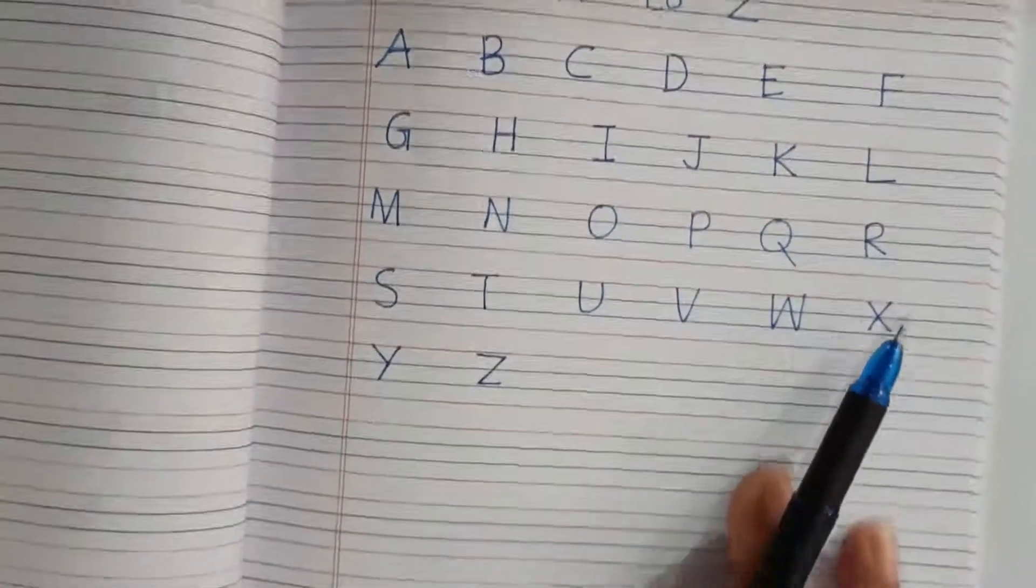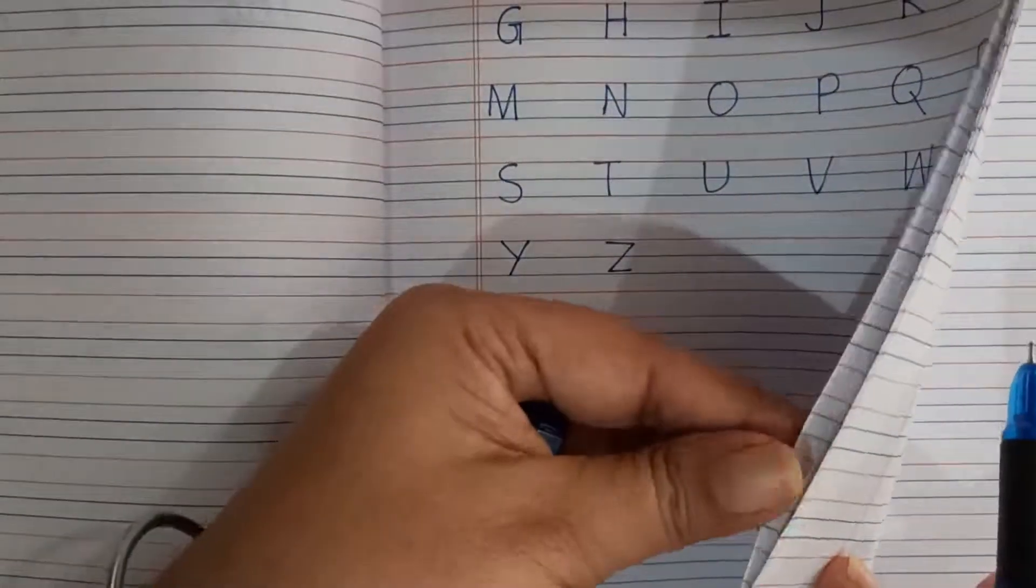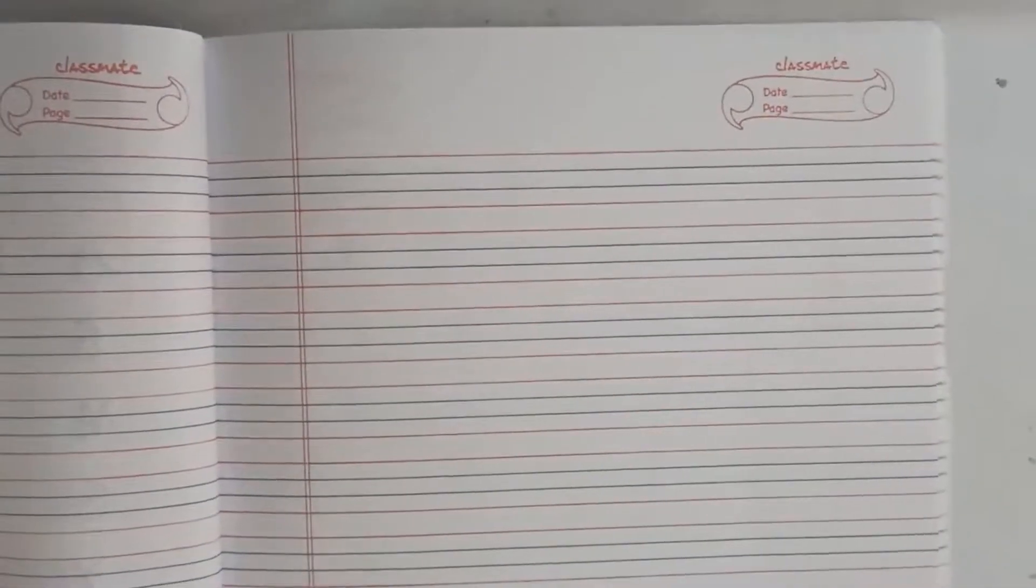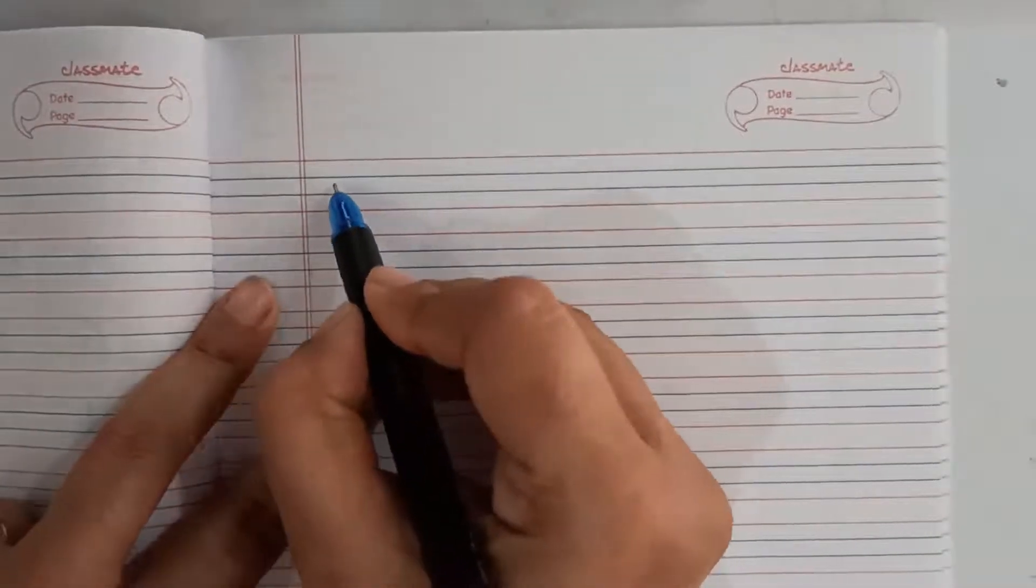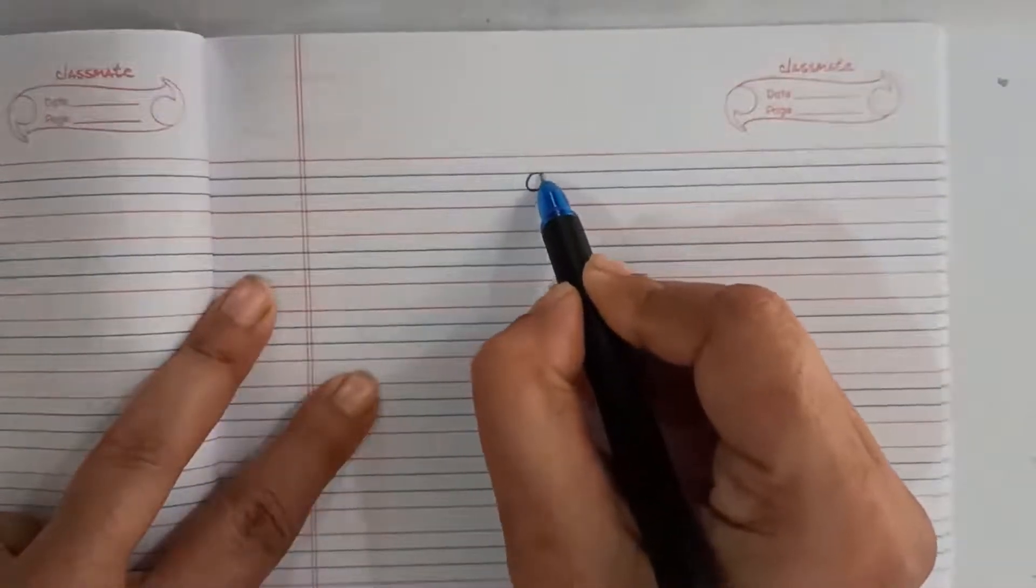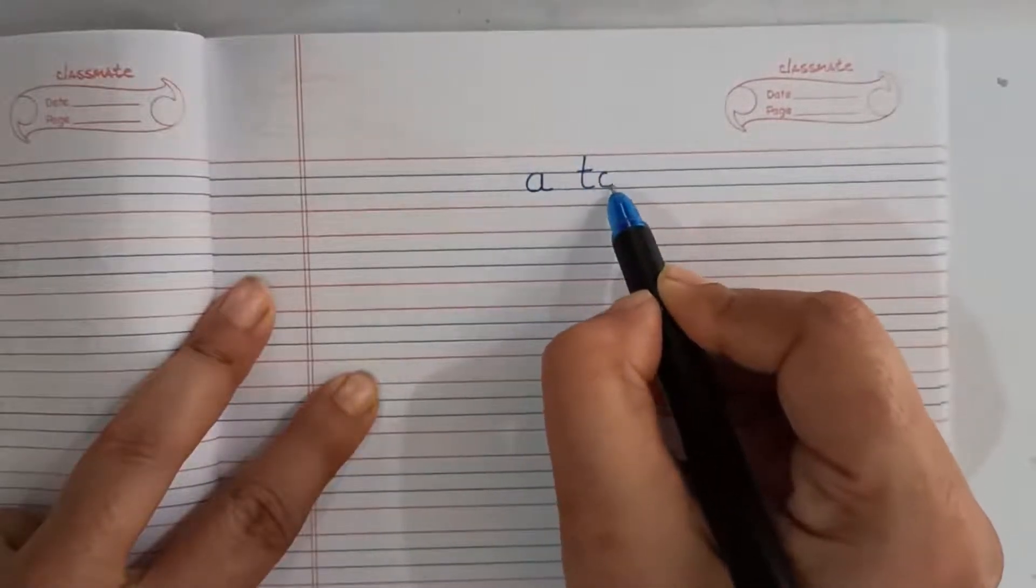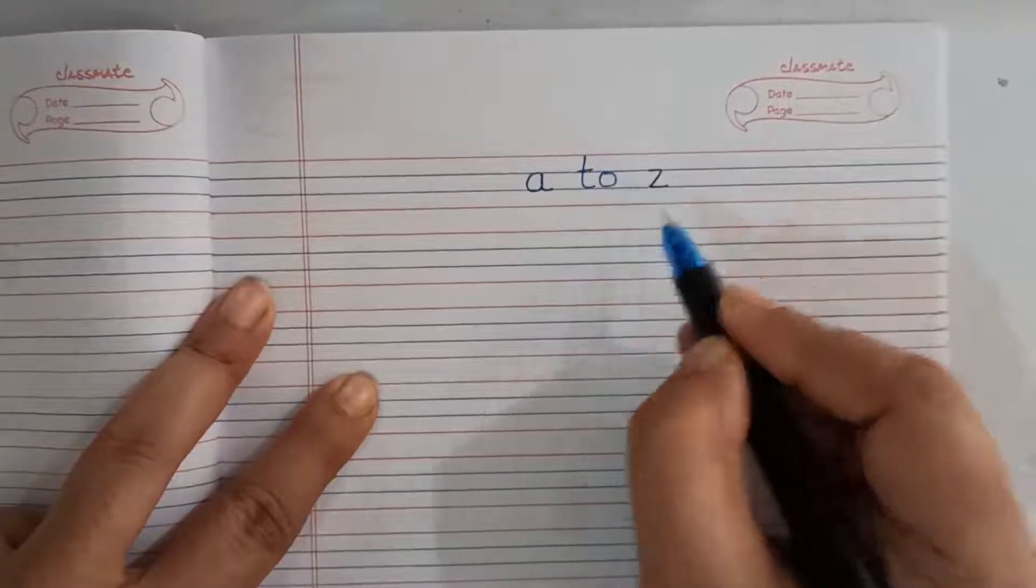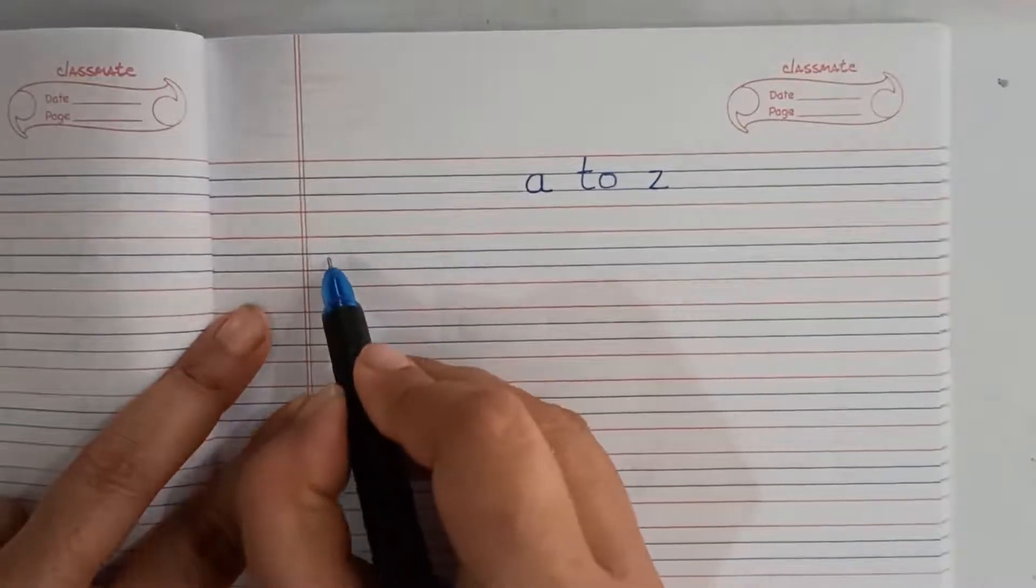Now I will show you the small A to Z. Same way you take this English notebook, three lines notebook and small A to Z. Maximum alphabet we will write in the middle line. Some are from upper side, some are from lower side. Now look.